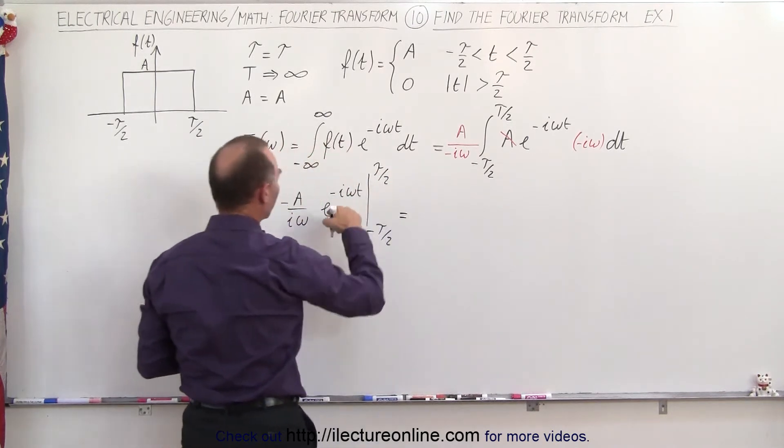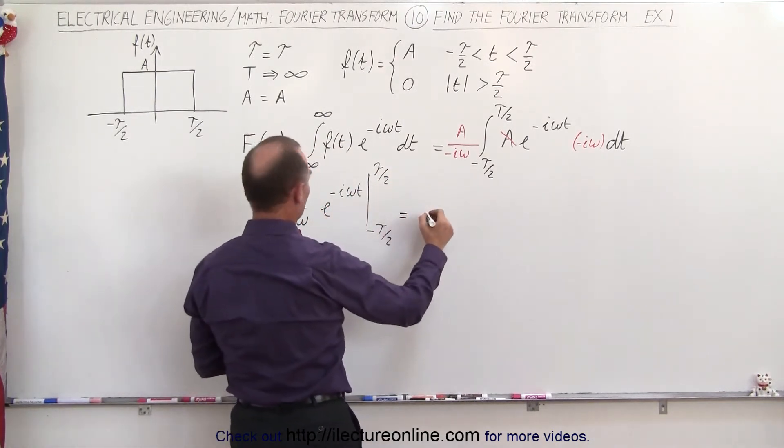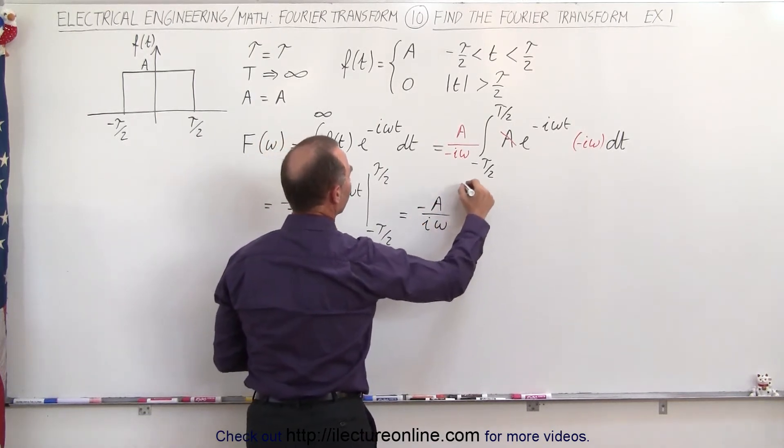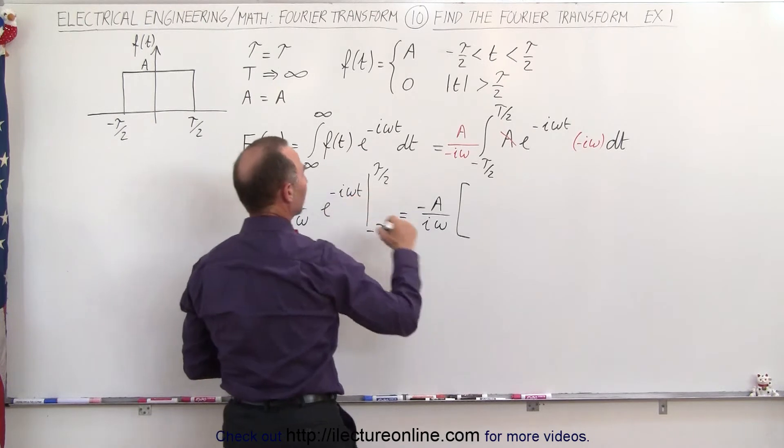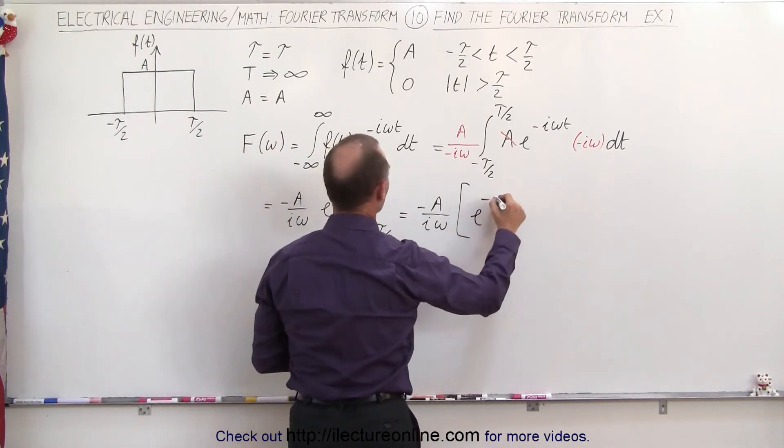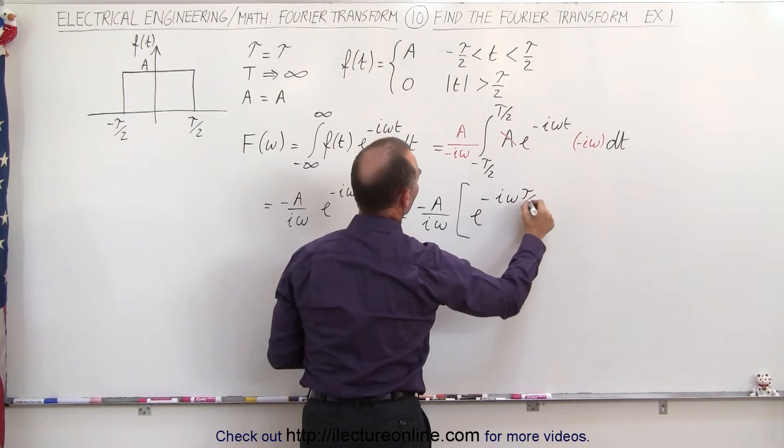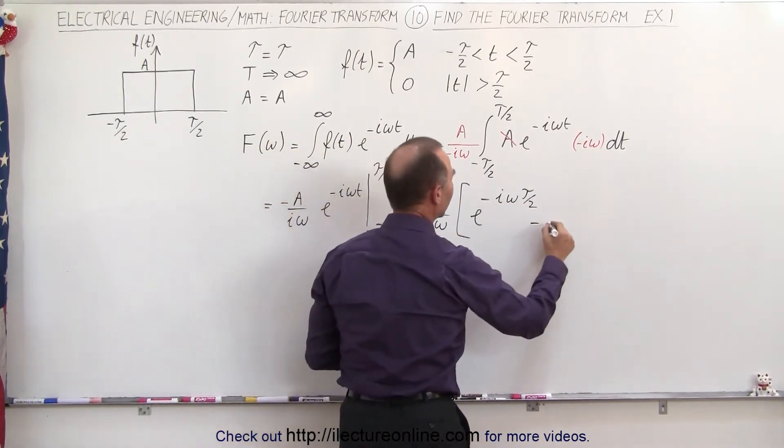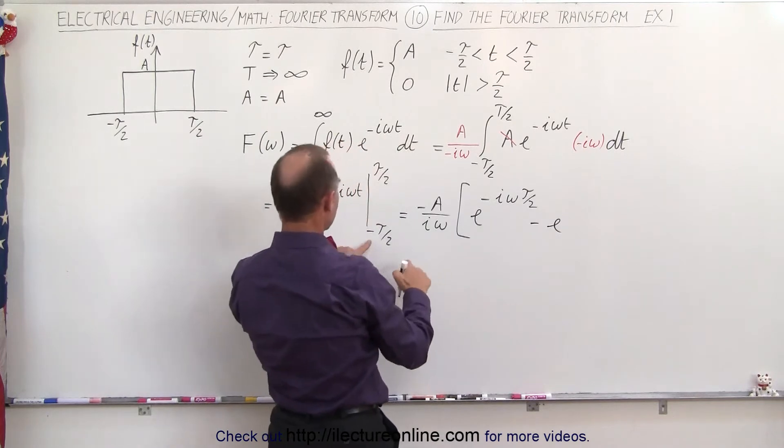So when we plug in the upper limit we get the following: keep this constant right here, so it's minus A divided by i omega times—when I plug in the upper limit I get e to the minus i omega times tau over 2—and then plug in the lower limit, that's minus e to the... let's see here, plug in a minus, that becomes a plus...